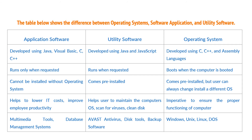Examples of application software are multimedia tools and database management systems. Examples of utility software are Avast antivirus, disk tools and backup software. Examples of an operating system are Windows, Unix, Linux and DOS.